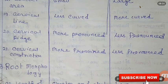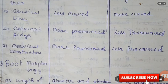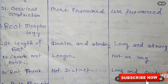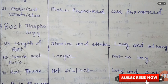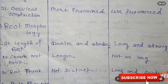The cervical constriction is more pronounced in deciduous teeth and less pronounced in permanent teeth. Regarding root morphology: the root length is shorter and more slender in deciduous teeth and long and strong in permanent teeth. The crown-to-root ratio is longer in deciduous teeth and not as long in permanent teeth. The root trunk is not distinct in deciduous teeth but long and distinct in permanent teeth.